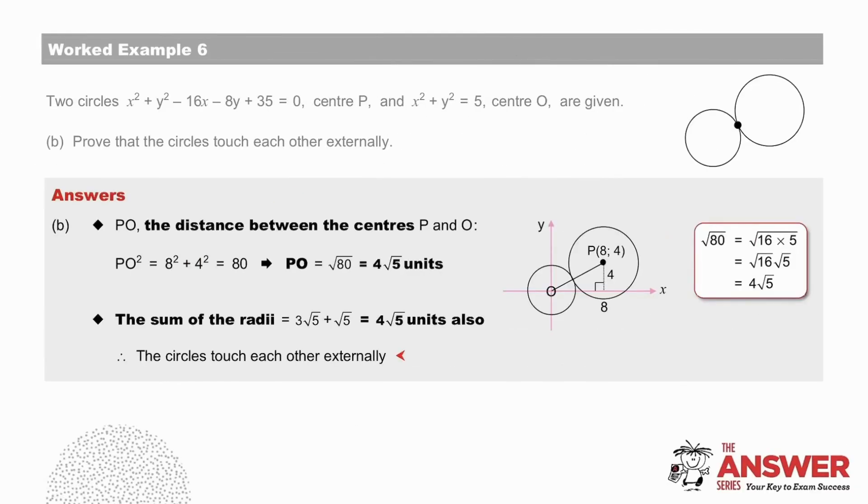And now part B. Pause to check this. To prove that the two circles touch each other externally, we apply a converse statement and prove that the distance between the centers equals the sum of their radii. And part A was a great step up towards determining the length of PO, the distance between the centers P and O, which we find to be 4 root 5 units. And the sum of the radii is equal to 4 root 5 units also, and therefore the circles touch each other externally.